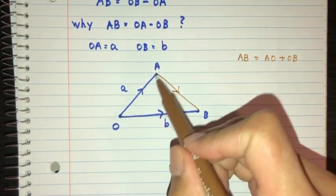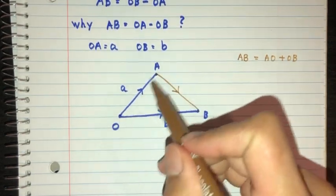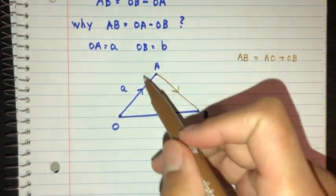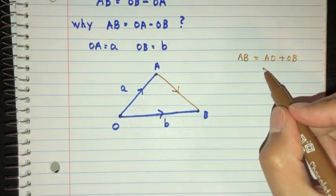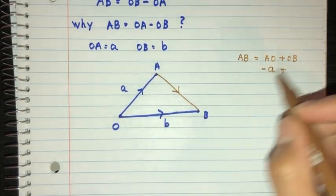Now, OA is A, so OA is in this direction, but AO will be in the opposite direction, so it will have to be minus A. Plus OB is equal to B.